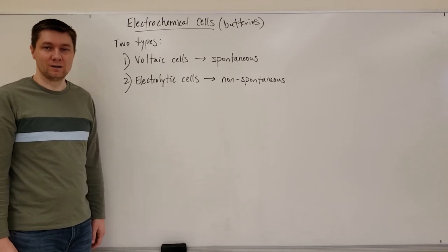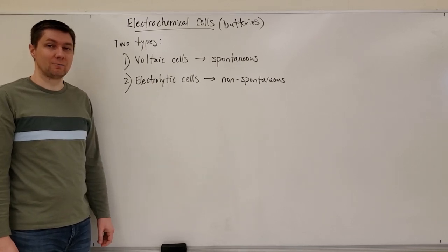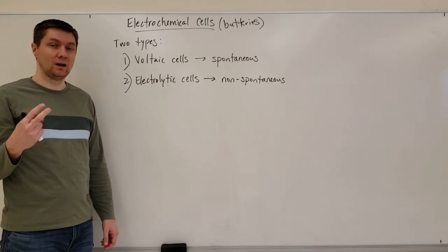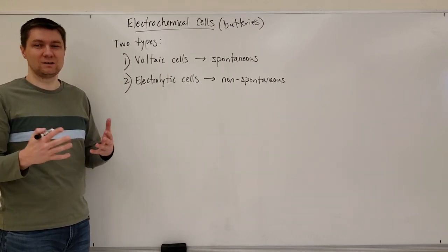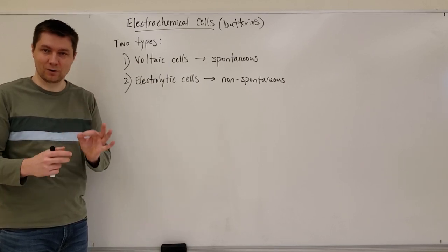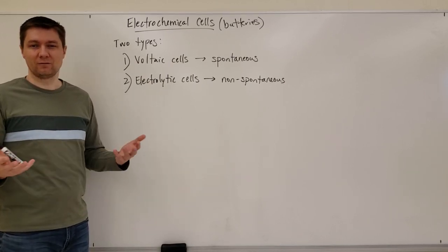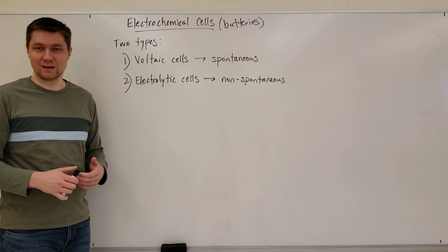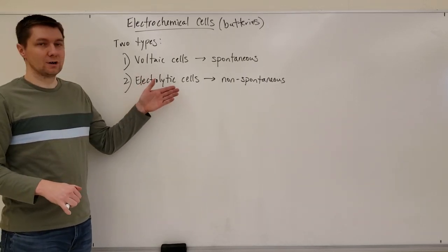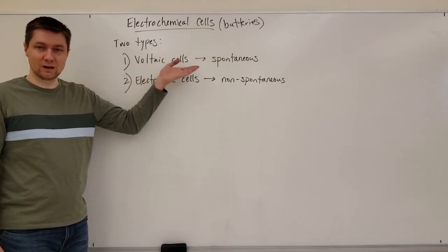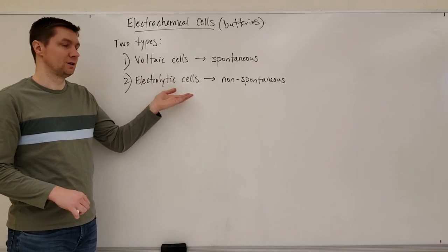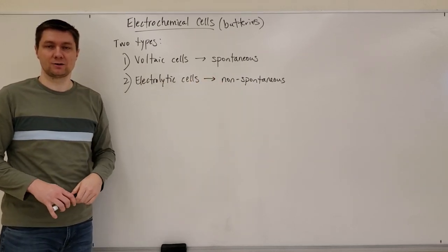The next concept is electrochemical cells. There are two types: voltaic cells and electrolytic cells. When we say 'cells' here, we don't mean the living things our bodies are made of - we're referring to batteries in chemistry. Voltaic cells involve a spontaneous reaction, while electrolytic cells involve a non-spontaneous reaction.